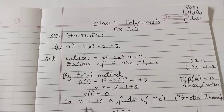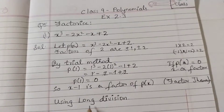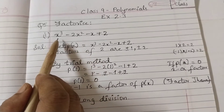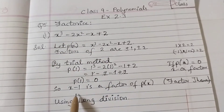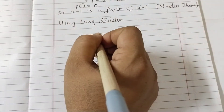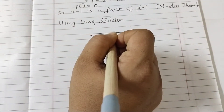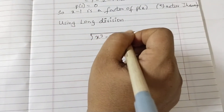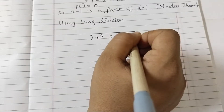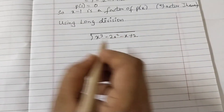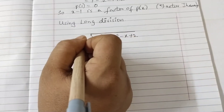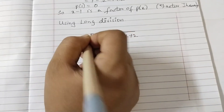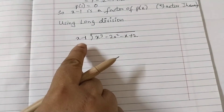So now we got one factor of this given polynomial. We will find the other factors using long division. When we do long division, we will use the polynomial as the dividend and x minus 1 as the divisor. So we write x cubed minus 2 x squared minus x plus 2 as the dividend, and x minus 1 is the divisor.